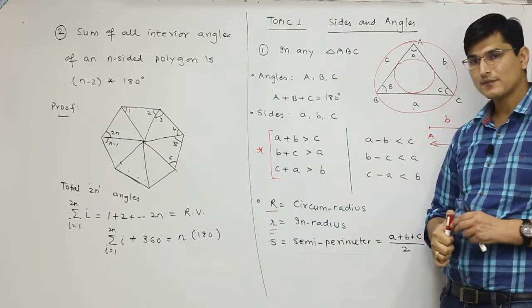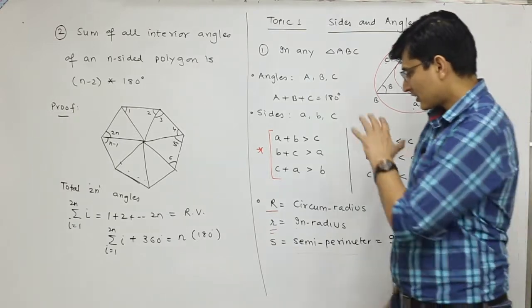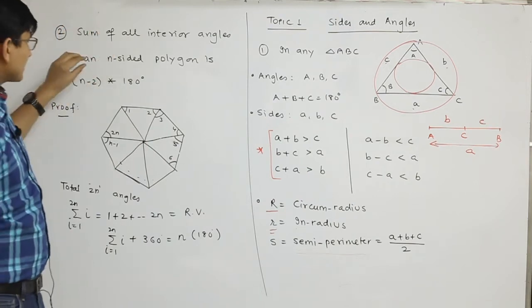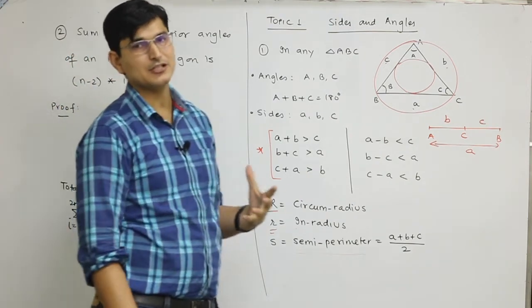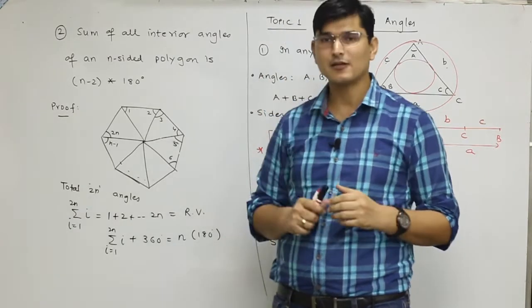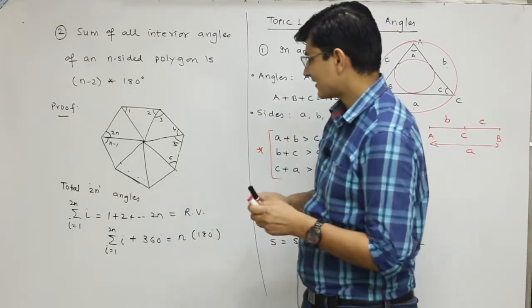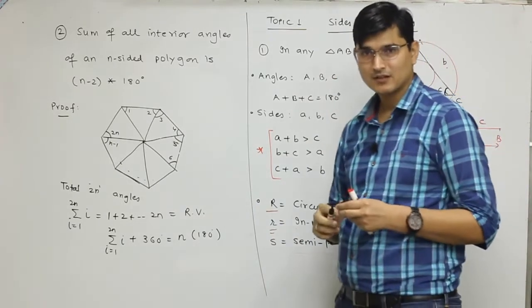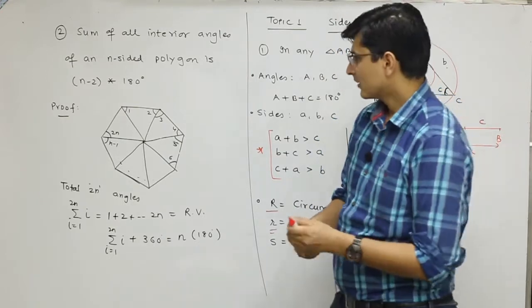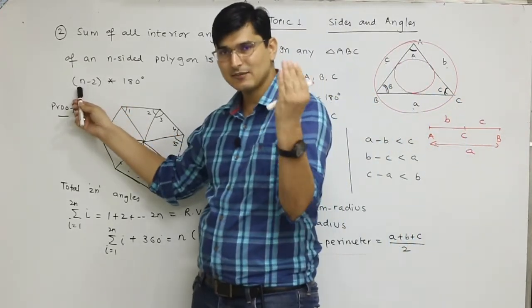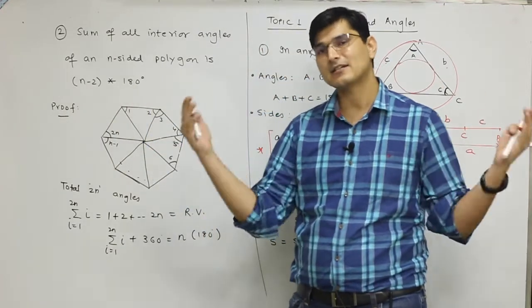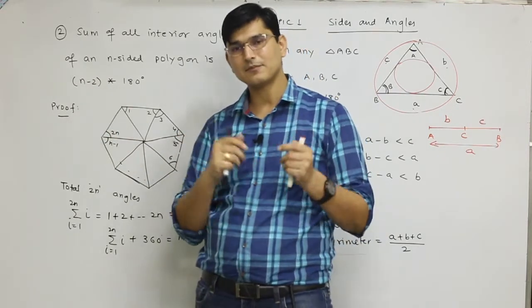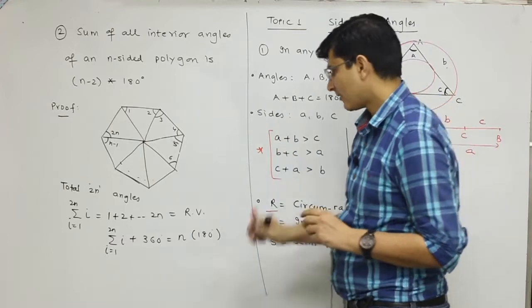Next point is: sum of all interior angles of an n-sided polygon is (n-2)×180. For any n-sided polygon, the sum of interior angles is (n-2)×180. For example, if you have a triangle, n=3, so (3-2)×180. If you have a quadrilateral, the value is 360. This is how you can find the sum of interior angles. Here is the proof.